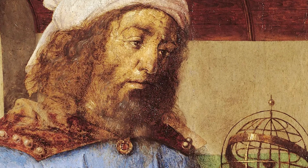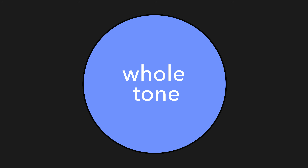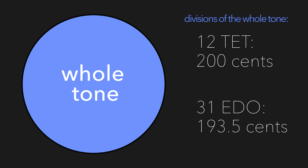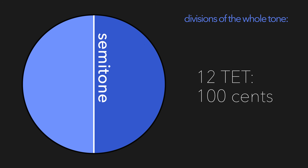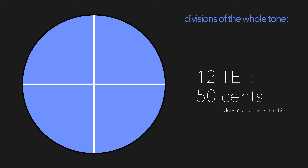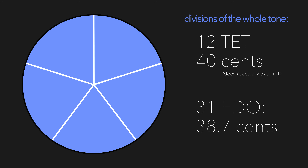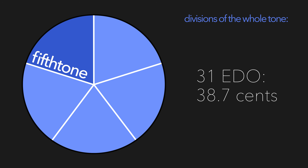Bill describes the Diesis as what happens when you split the whole tone into five separate parts. The whole tone in 12 TET is 200 cents; in 31 it's 193.5 cents. Dividing it in half gives the semitone at roughly 100 cents; split into quarters gives the quarter tone at about 50 cents. But if you split that whole tone into an odd number of parts — say, five — you get the fifth tone, which in 31 works out to be 38.7 cents. The fifth tone is the Diesis.